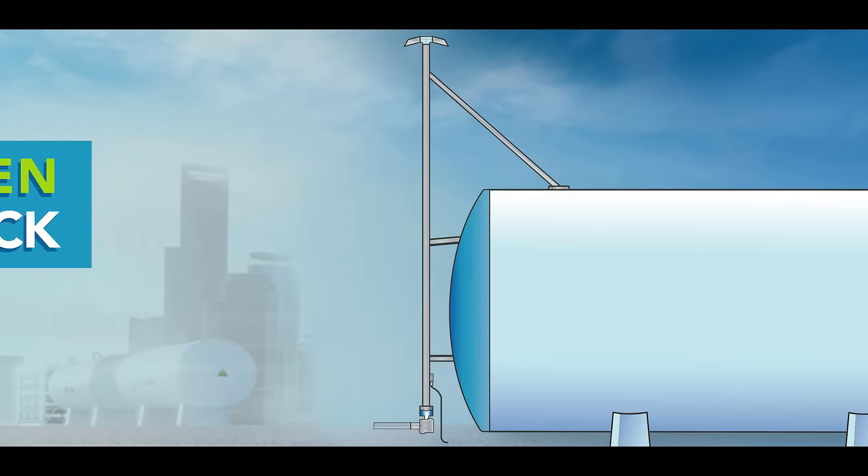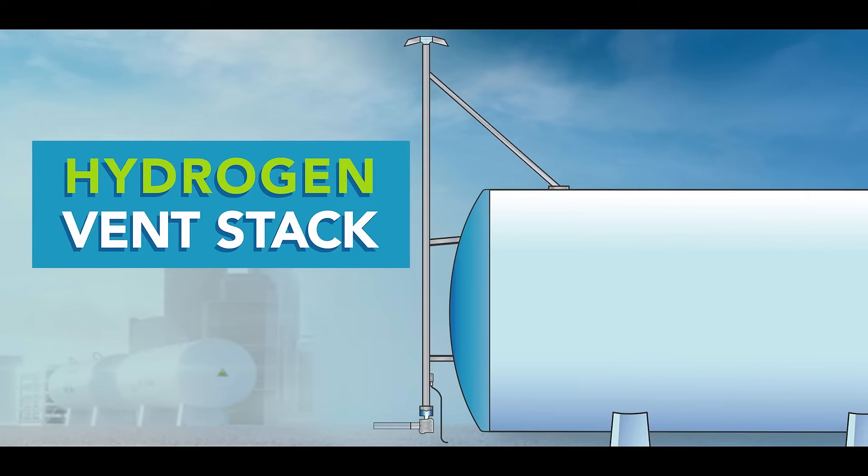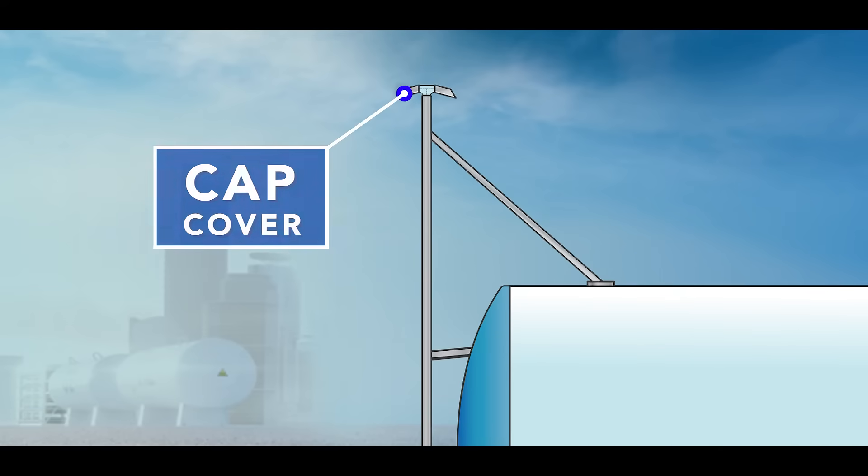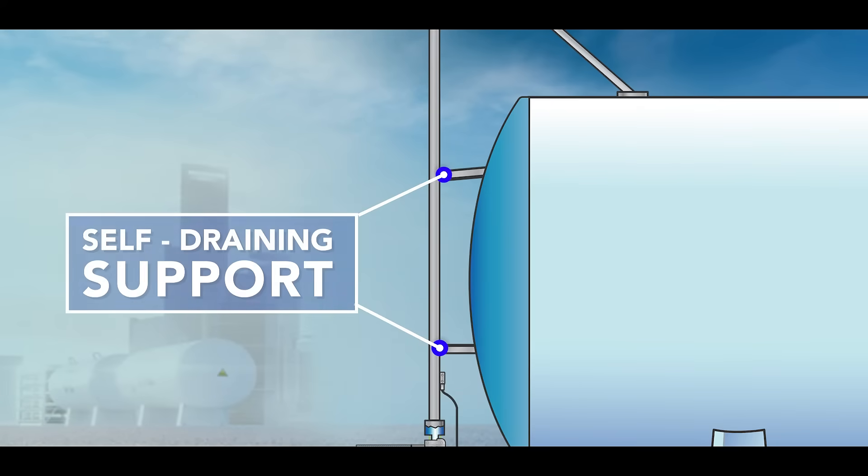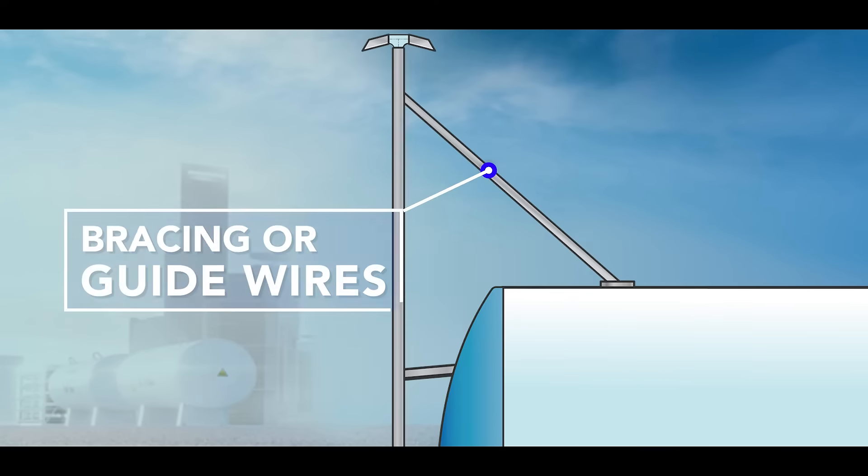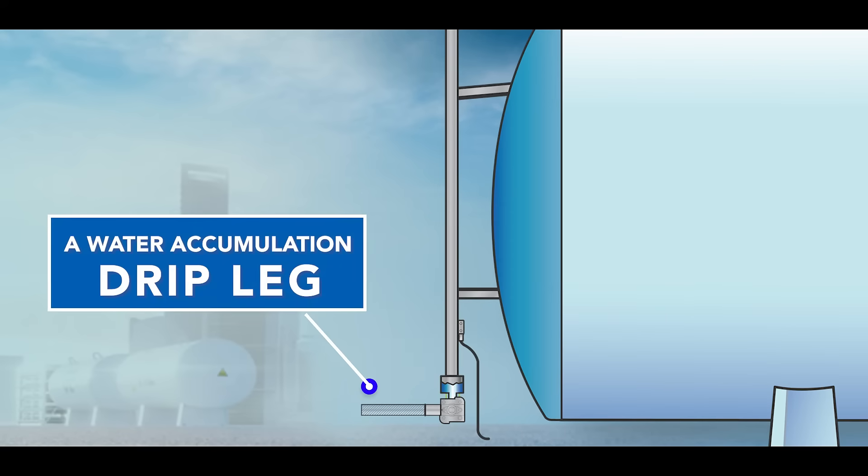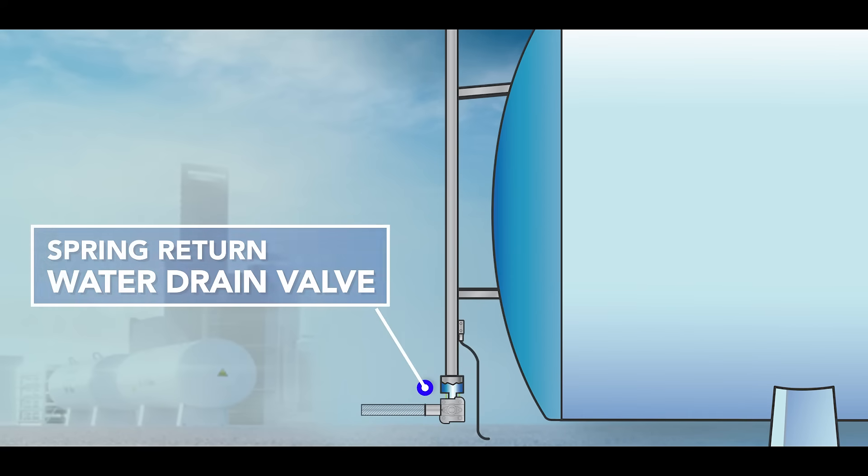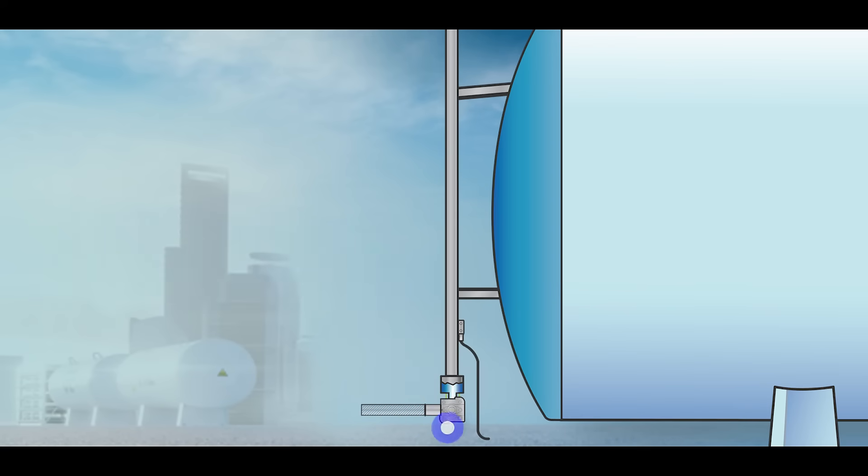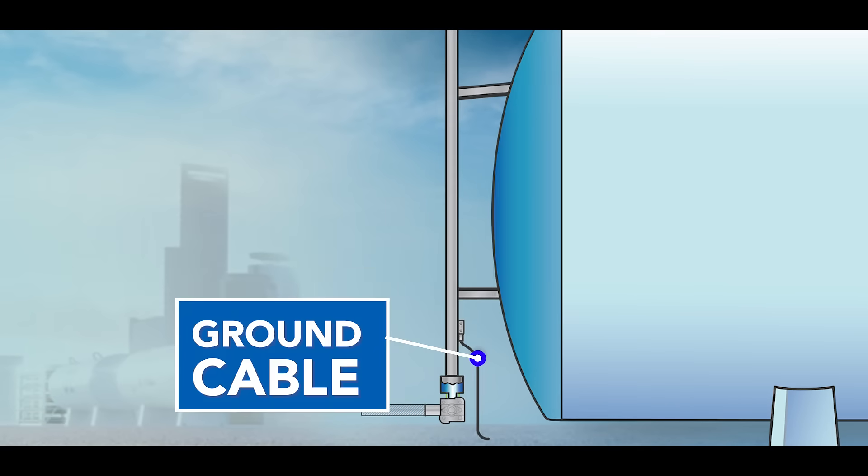Let's take a closer look at the hydrogen vent stack. It includes the following features: a cap cover to divert hydrogen upwards and prevent rain accumulation, self-draining support to keep liquid air away from the tank's outer shell, bracing or guide wires for support, a water accumulation drip leg, a spring return water drain valve, a drip pan for condensed liquid air, and a ground cable to the grounding grid.